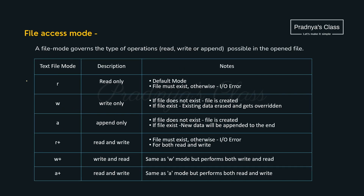Here is a list of the different modes available for the text file. Out of these six, we will be concentrating more on these three modes. For reading the file, R mode will be used. To write data to the file, we will be using W mode. And to append data to the file, we will be using A mode.